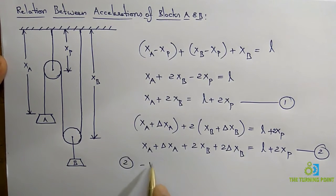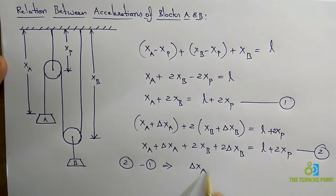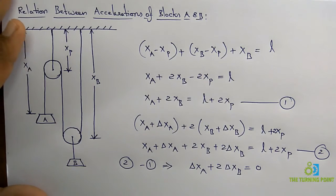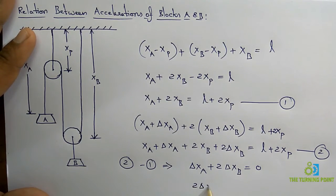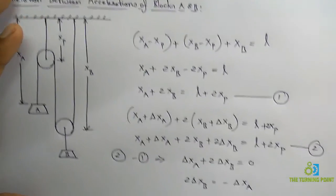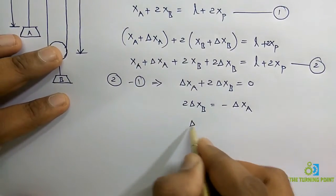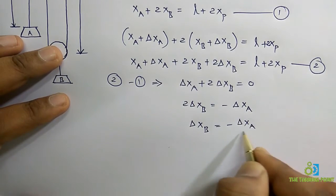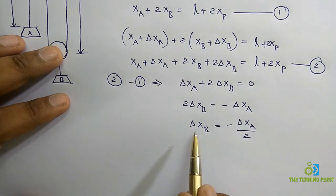Subtracting Equation 1 from Equation 2, xa cancels out, giving: delta xa plus 2 delta xb equals 0. From that, 2 delta xb equals minus delta xa, so delta xb equals minus delta xa divided by 2. This is the relation between the incremental movement of block B and block A.